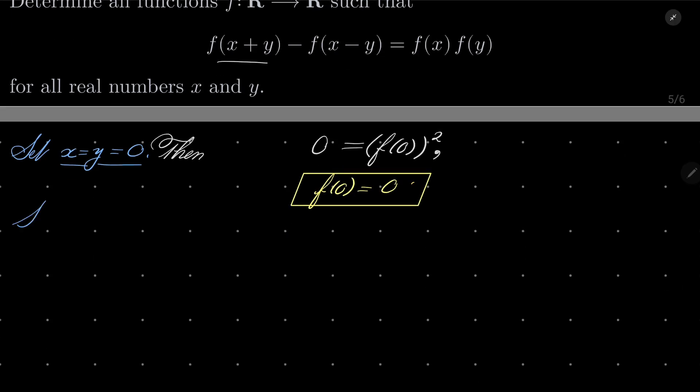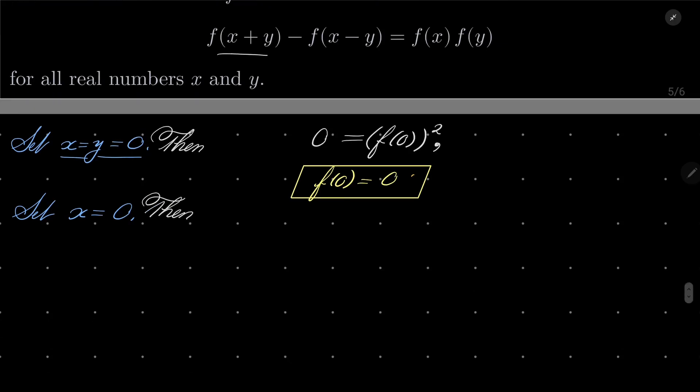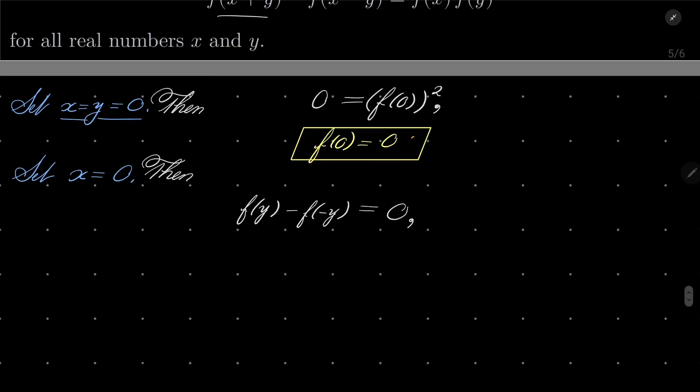Alright, now let's set something else. Now, let's just set x to be 0. Then, we have the following. If just x is 0, then we have f(y) - f(-y) equals f(x)f(0), but f(0) is 0, so it's just 0. Or, in other words, f(y) = f(-y). That is, our function is even.